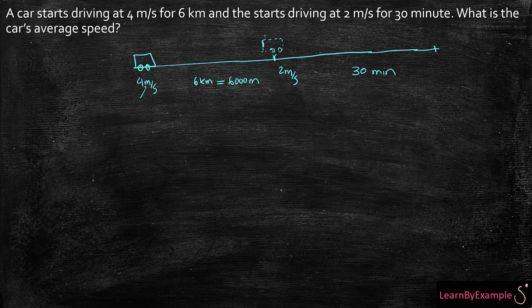Since I have my velocities in meters per second, I want to turn minutes into seconds. The unit I want to convert is minutes, so I'm going to write it on the opposite side. One minute is 60 seconds. So 30 times 60 is 1,800 seconds.